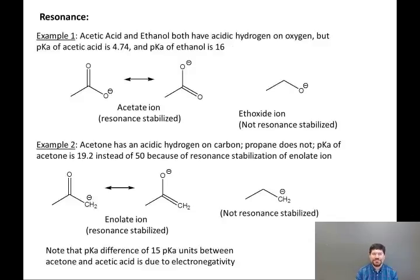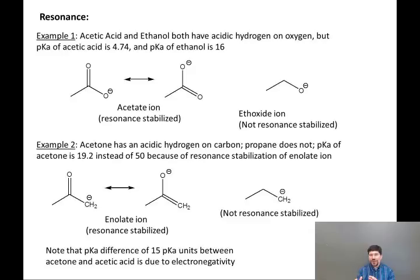The next factor is resonance. Acetic acid and ethanol both have an acidic hydrogen on oxygen, but the pKa of acetic acid is 4.74 and the pKa of ethanol is 16. This is because the conjugate base of acetic acid, the acetate ion, is resonance stabilized — there are two resonance structures where the minus charge can be on either oxygen. Ethoxide ion is not resonance stabilized; that one oxygen must bear the full negative charge. The difference is 10 pKa units.